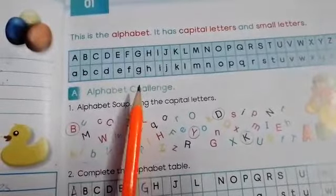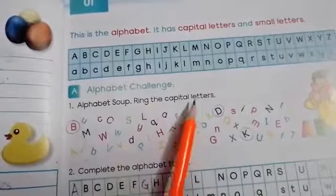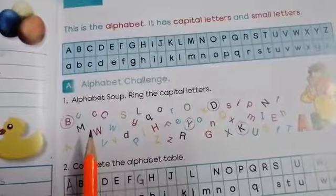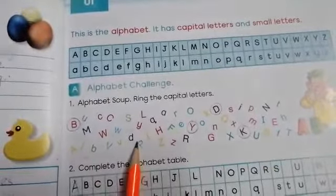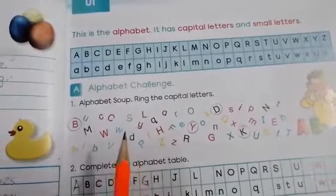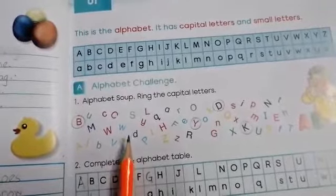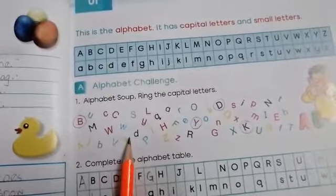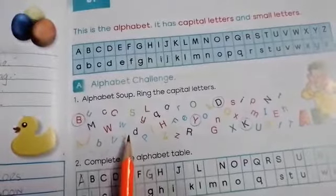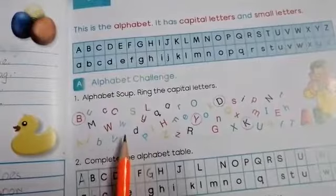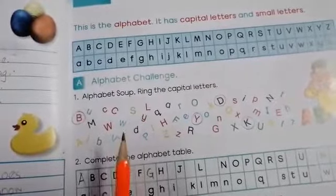Alphabet challenge. Question number 1 is alphabet soup. Ring the capital letters. Here you can see we have two different kinds of letters here. One is capital and the second is small. Is soup mein hamare pas kuch capital letters hain aur kuch small letters hain. So this is the mixture of capital and small letters. That is why it is called soup. Now, you have to ring, you have to circle the capital letters. Aap ne in me se capital letters ko circle karna hai. And this is your homework.